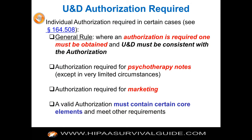The omnibus rule had a lot to say about individual authorization. Authorization must be obtained in several instances — for example, psychotherapy notes: unless you get an authorization from the patient, you can't share psychotherapy notes, except in very limited circumstances such as emergency or imminent harm. If you want to market to your patients, you need an authorization from them, and the fact that you're going to market to them needs to be in your notice of privacy practices.